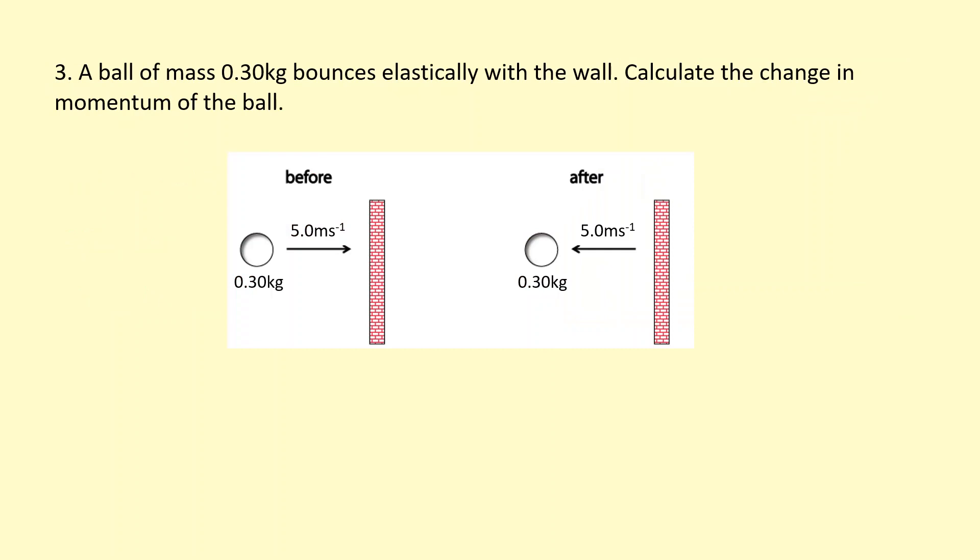Finally, in this example here, a ball of mass 0.3 kilogram bounces elastically with the wall. Calculate the change in momentum. So it's initially moving at 5 meters per second towards the right. And then it bounces off elastically, meaning its kinetic energy is being conserved. So it's coming back at 5 meters per second. A common mistake here is to think that the change in momentum is 0, because it looks like its speed hasn't changed. But of course its velocity has changed, its direction has changed.